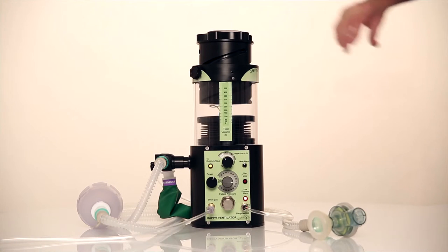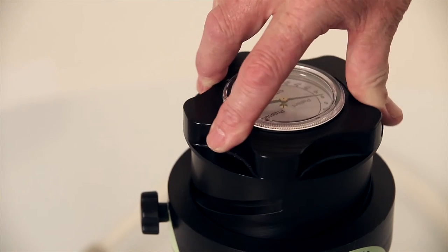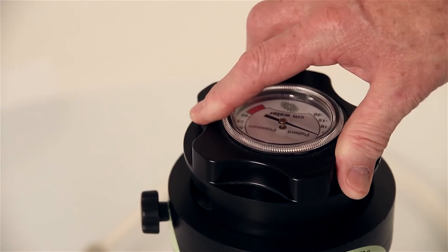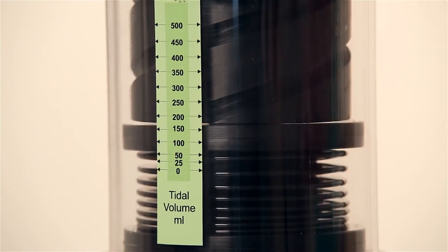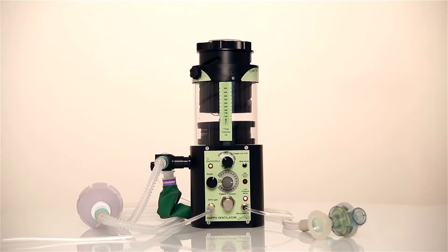The tidal volume is controlled by turning the helix screw on top of the bellows and reading the setting here. It can be used either as a volume generator or in a pressure limited mode depending on the setting of those two parameters.